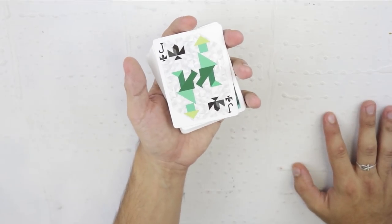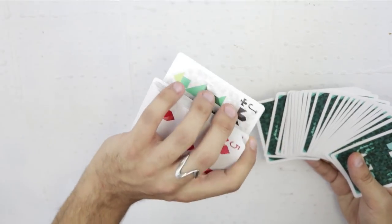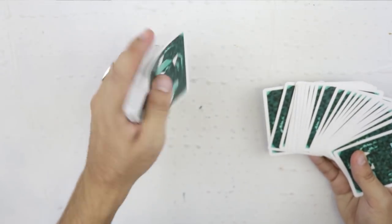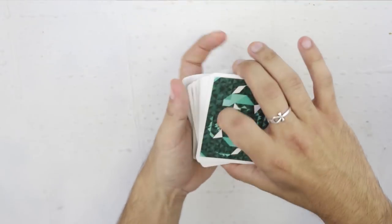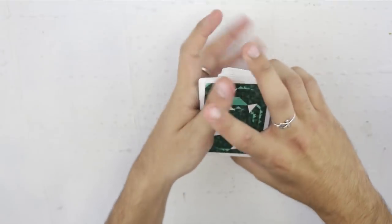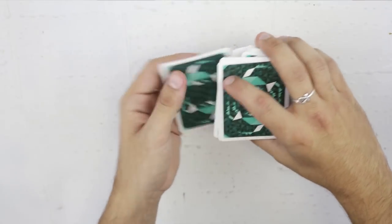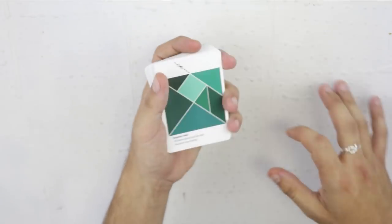And then here what's going to happen is you're going to control this card to the bottom via your favorite method. Mine is the octuple undercut, as I've mentioned before. So you're going to get a break below the card as you square up the deck and then you're going to cut it to the bottom of the deck. That's one, that's two, that's three, that's four, that's five, that's six, that's seven, and then that's the octuple undercut.